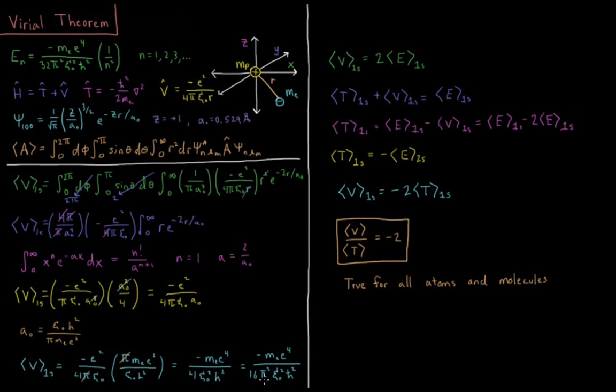You might notice this formula is very similar to the value we had for the total energy. It's just the total energy times 2 whenever n equals 1. So the potential energy equals 2 times the total energy.